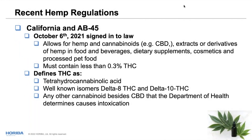In California, Proposition AB45 passed in October, which finally allowed hemp products to be legally incorporated into beverages, dietary supplements, cosmetics, and pet food statewide. The product must meet the 0.3% or less THC level. Importantly, California defined what counts as THC — including delta-8 THC — within that 0.3% threshold, which other states have not yet done.